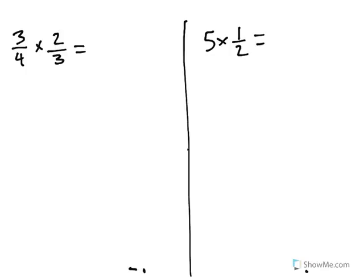Let's start with 3 fourths times 2 thirds. Now, it's really hard to conceptualize what this means, but it's actually saying 3 fourths groups of 2 thirds.